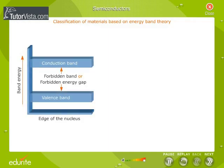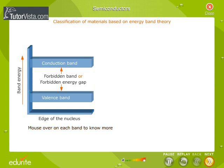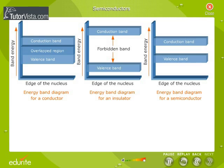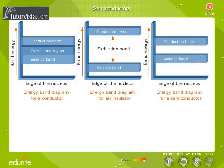Classification of materials based on energy band theory. To understand the behaviour of solids, we need to know about the three energy bands, namely valence band, conduction band and forbidden band or forbidden energy gap. Displayed here is the energy band diagram of a conductor, insulator and a semiconductor.